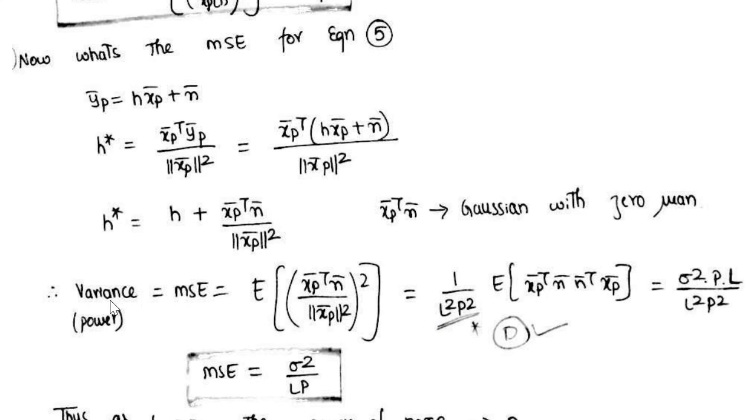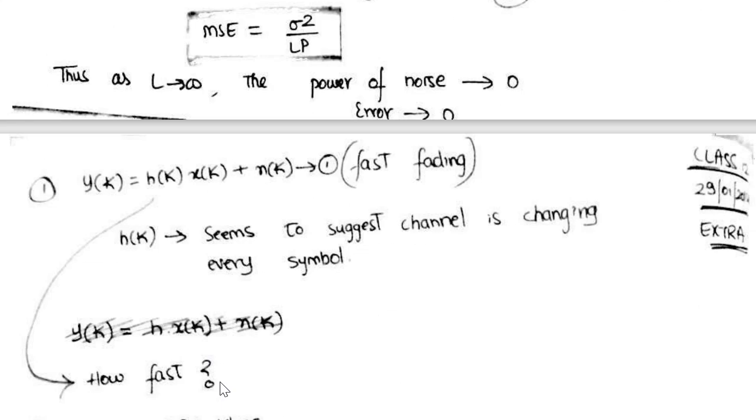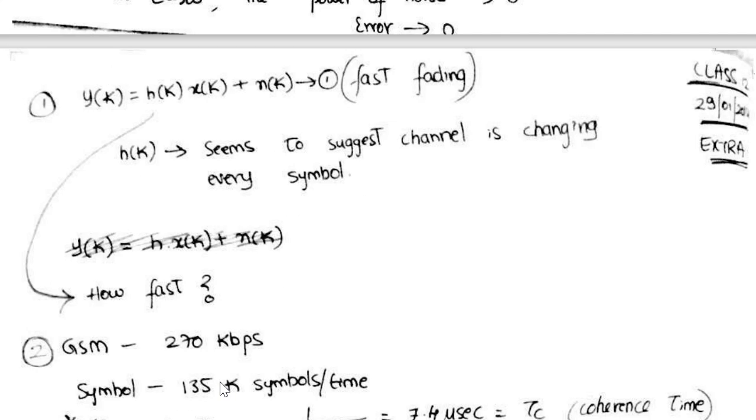What else it depends on, if you take the variance of the mean square error, we will also get to know that it also depends on the length. So larger the pilot length, the mean square error would be less. Of course these are some very basic concepts which will help you in your research.